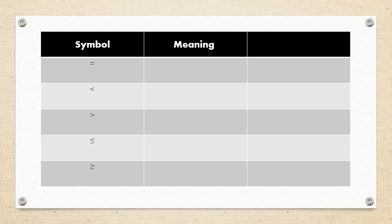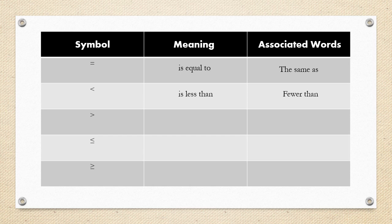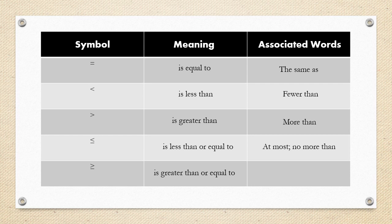We have here a table. The first column is the symbol, the second column is the meaning, and the third column is the associated words. The symbol '=' means 'is equal to,' associated with 'the same as.' The symbol '<' means less than, associated with 'fewer than.' The symbol '>' means greater than, associated with 'more than.' The symbol '≤' means less than or equal to, associated with 'at most' or 'no more than.' The symbol '≥' means greater than or equal to, associated with 'at least' or 'no less than.'